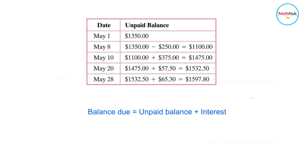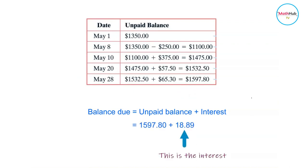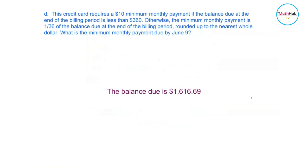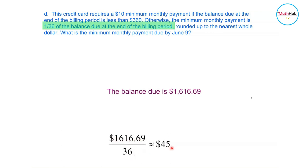The balance due on June 1 is the unpaid balance on May 31 plus $18.89 interest, giving a total balance due of $1,616.69. Because this exceeds $360, the customer must pay a minimum of 1/36 of the balance due. Dividing $1,616.69 by 36 gives a minimum monthly payment of $45.